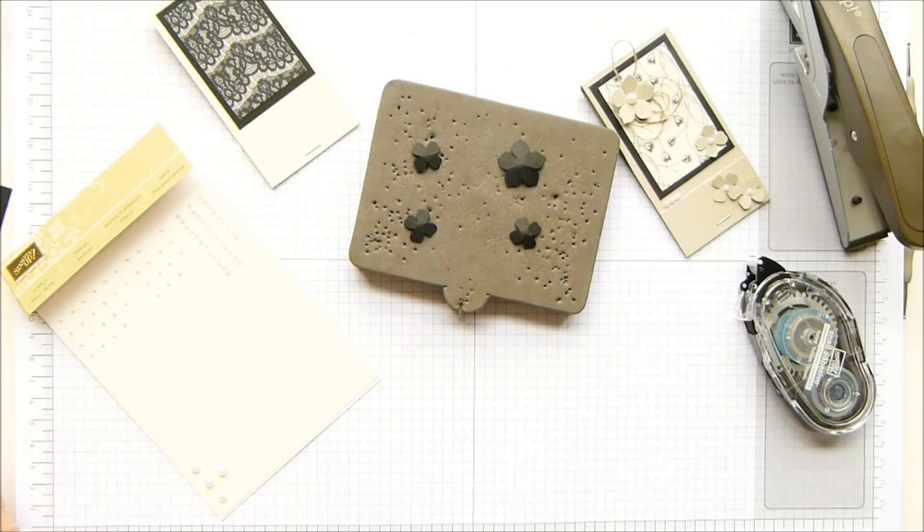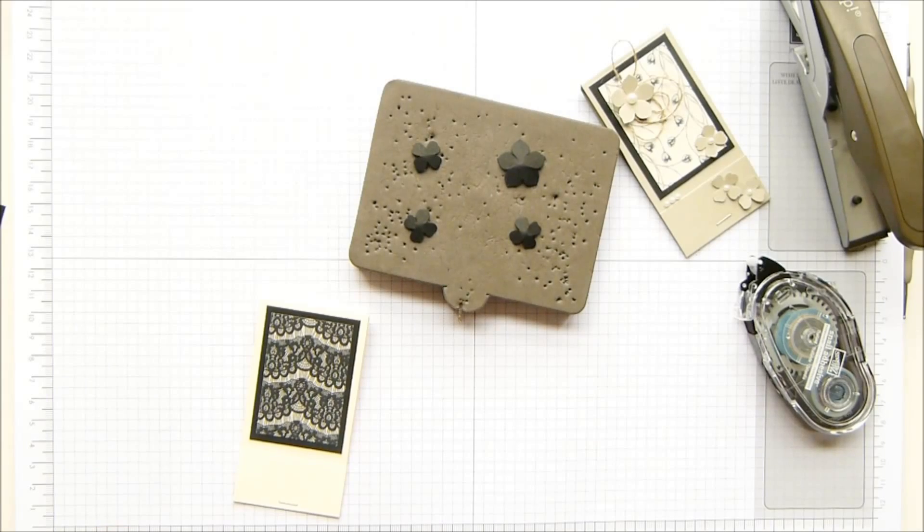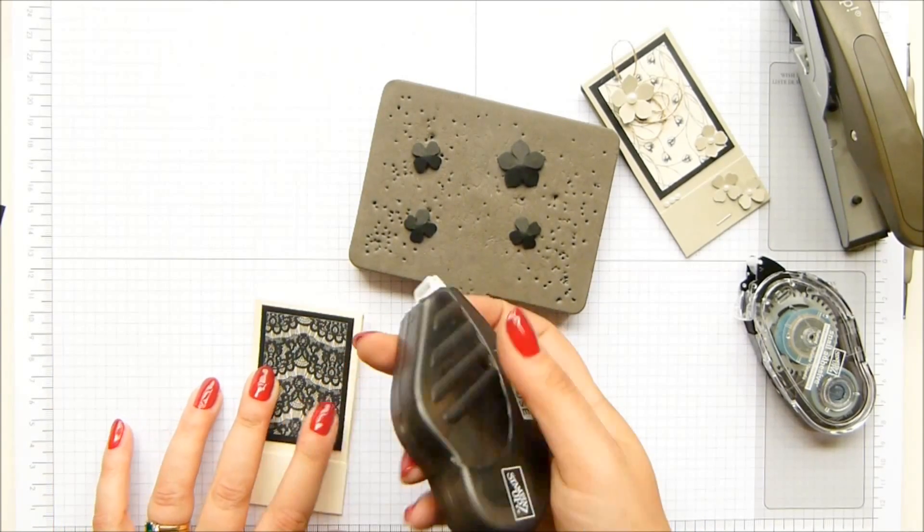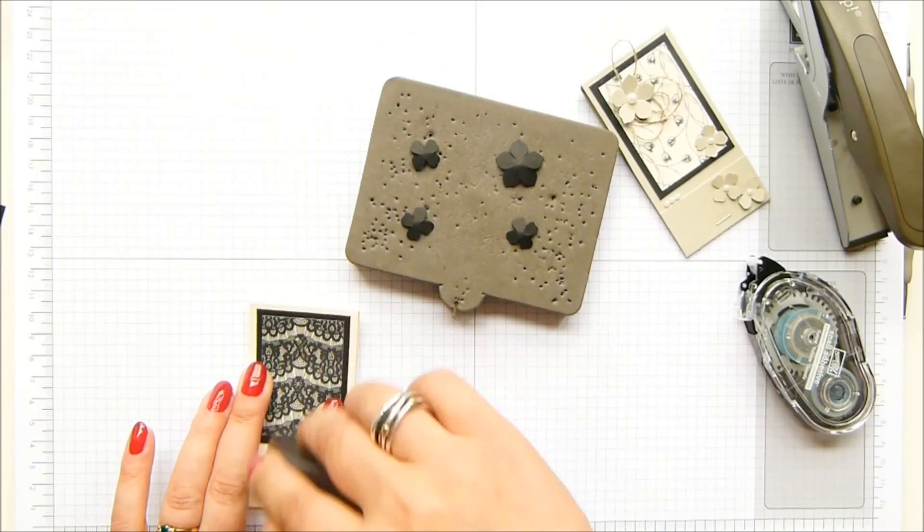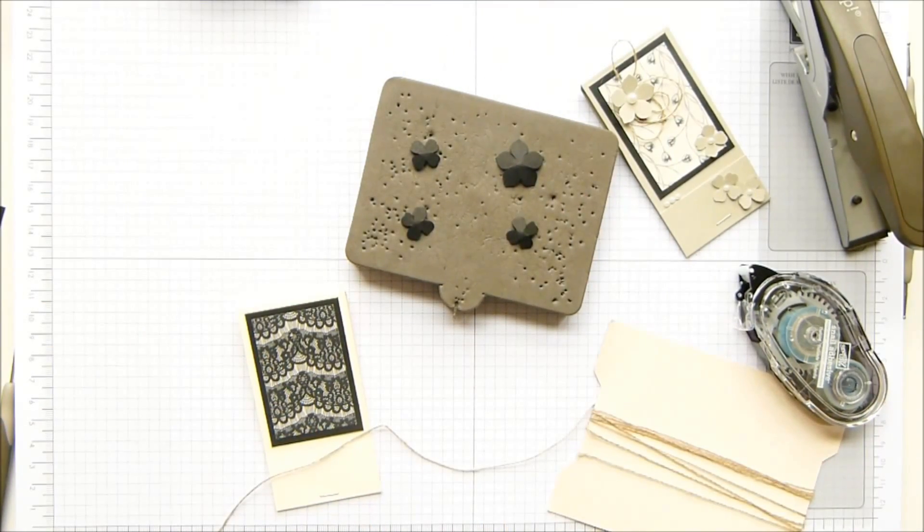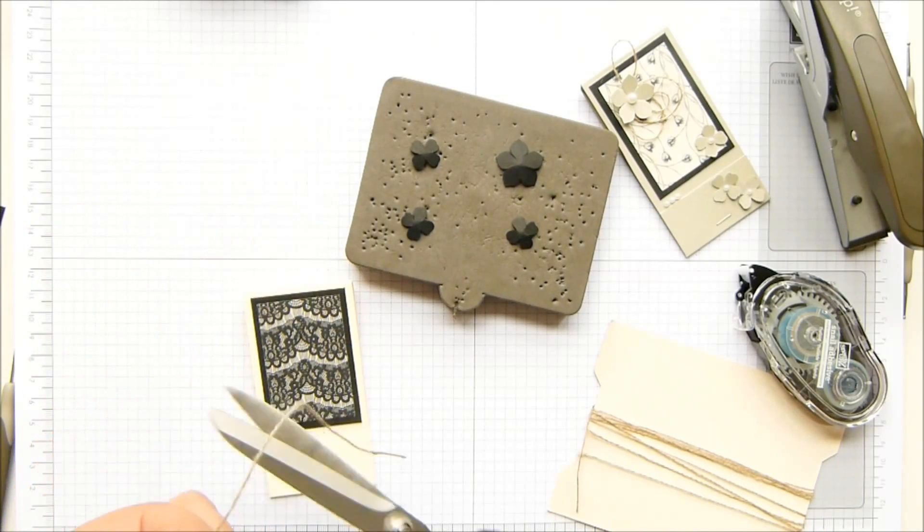And then to finish, I'm going to put a little bit of fast fuse on here so I can stick some linen thread. And I'm going to cut off a bit. And there is a kink in it. I don't know if you can see that.